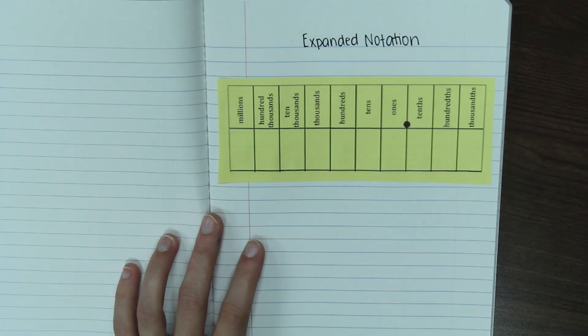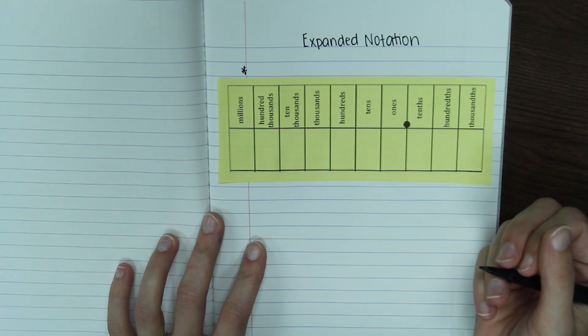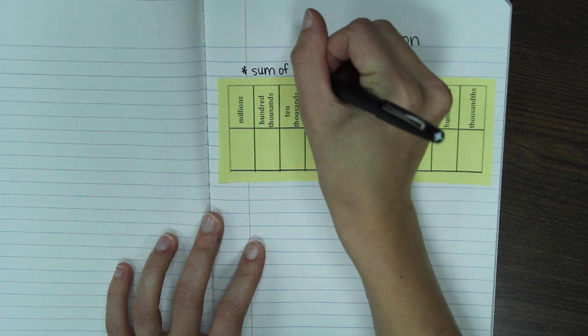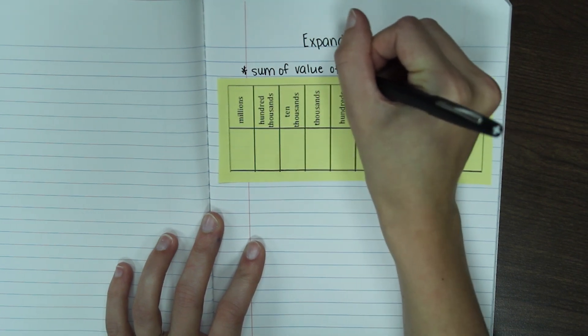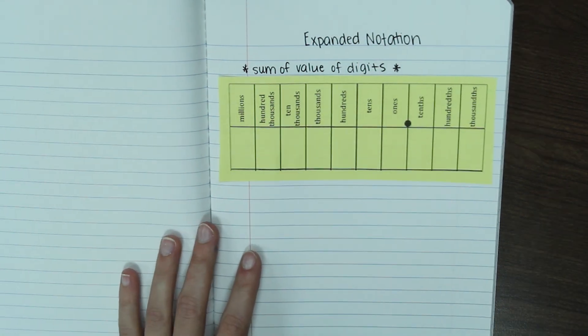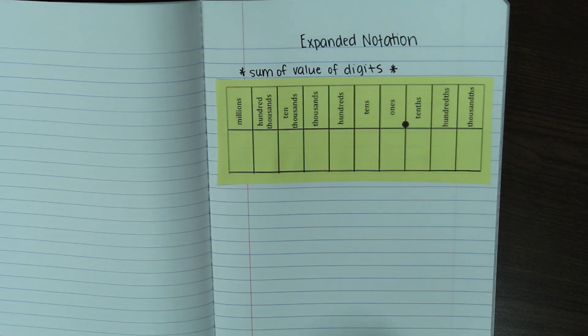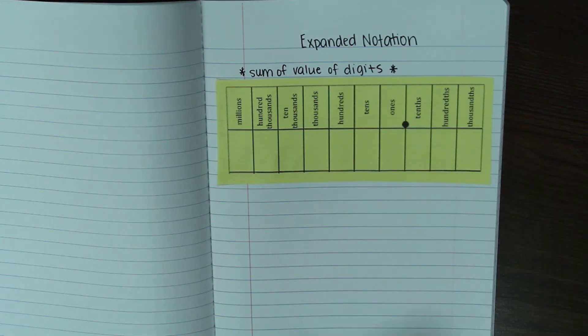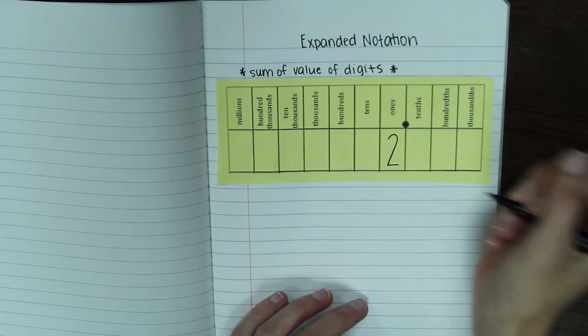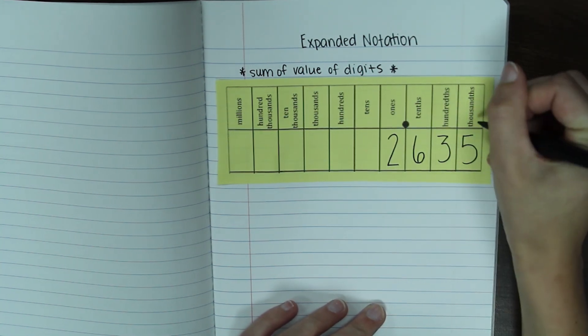This is something you should be pretty familiar with from third and fourth grade. Expanded notation is basically the sum of the value of each digit. So we're going to write that little definition right here. Sum of value of digits. So I'm going to put an example number up in this place value chart. You should have gotten one of these from your teacher. If you did not, take a second, pause the video, and draw it out so you have somewhere to write your number. It's going to be two in the ones place and 635 thousandths.